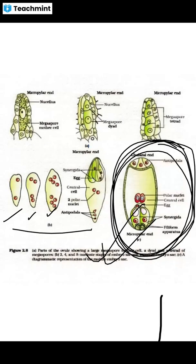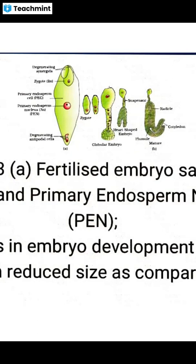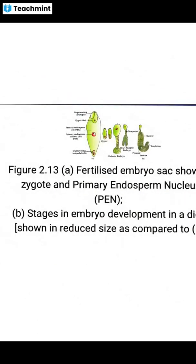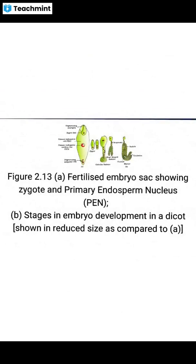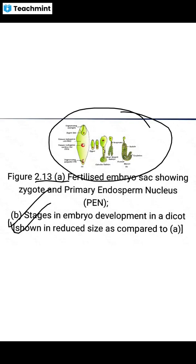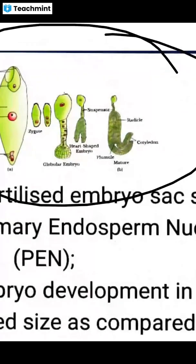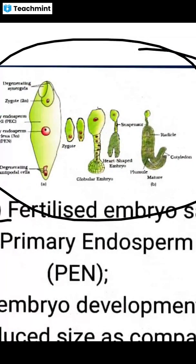You can refer to this diagram in the NCERT. Moving on, the next important one is the stages of embryo development in dicots — figure number 2.13 — showing embryo development in monocots and dicots. If you observe carefully, different shapes are shown: globular shape, heart shape, and torpedo shape. Practice these shapes carefully.